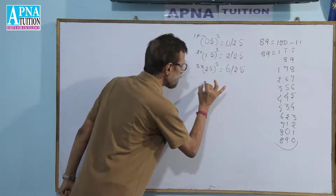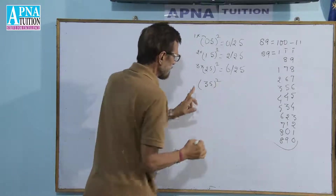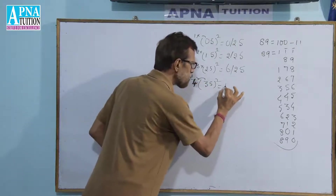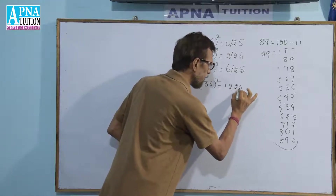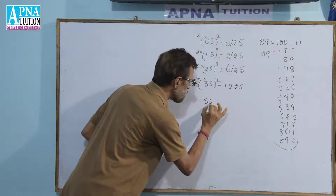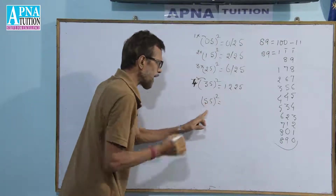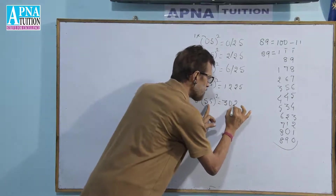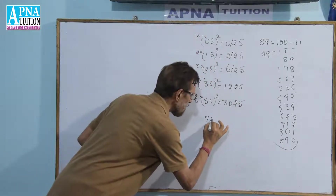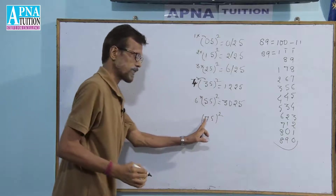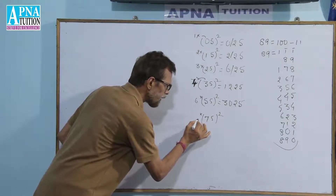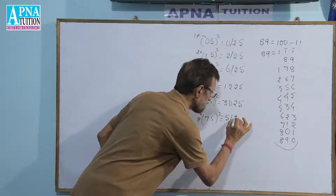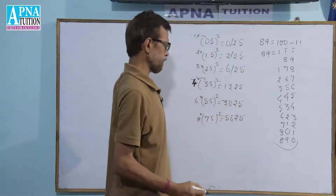For example, 35²: the tens digit is 3, multiply 3 by 4 to get 12, and the remaining part is 25 — so 35² = 1225. For 55²: multiply 5 by 6 to get 30, write 30 then 25 — so 55² = 3025. For 75²: the tens digit is 7, multiply 7 by 8 to get 56, and copy 25 as usual — so 75² = 5625.